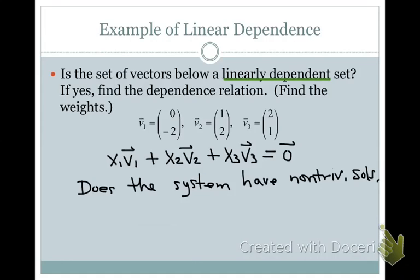If they are linearly dependent, the question asks us to find the weights — that is, the dependence relationship. Linearly dependent means the homogeneous equation has non-zero weights, so the weights in this case are x1, x2, and x3. We want to find what values x1, x2, and x3 might be.